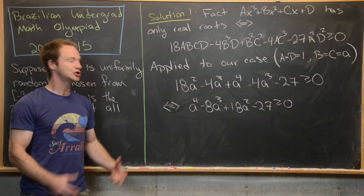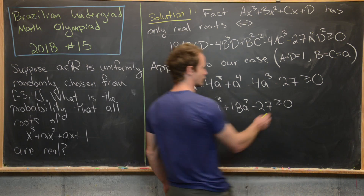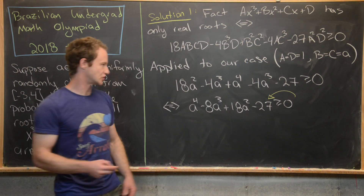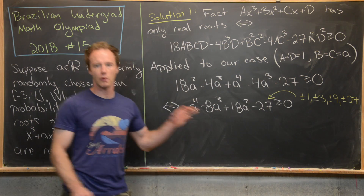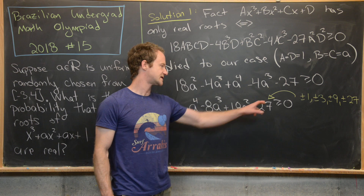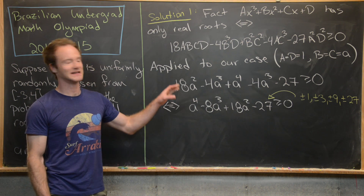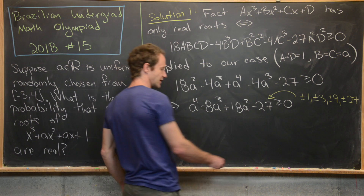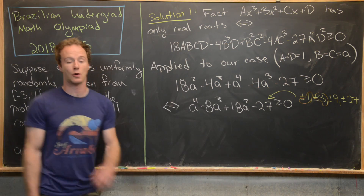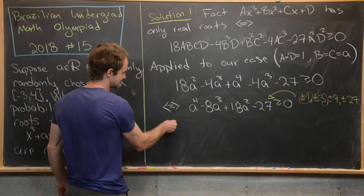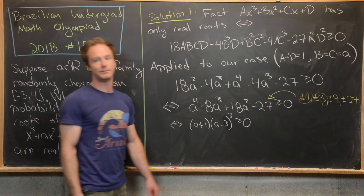This might look like too much to work with, but we can factor it. Using the rational root theorem, the possible rational roots are ±1, ±3, ±9, ±27. It turns out negative one and positive three are the only roots. Skipping the full factoring steps, the expression factors as (a + 1)(a − 3) cubed ≥ 0.